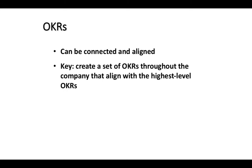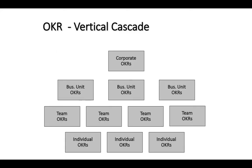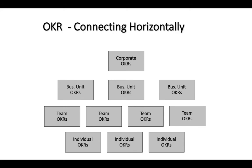After OKRs have been aligned at the highest level, the key to alignment is to create a set of OKRs throughout the company that align with those highest-level OKRs. The alignment should be both vertical and horizontal. Let me illustrate this using diagrams. The vertical alignment of OKRs is up and down throughout the organization, while the horizontal connection is literally across the organization, connecting both vertically and horizontally.